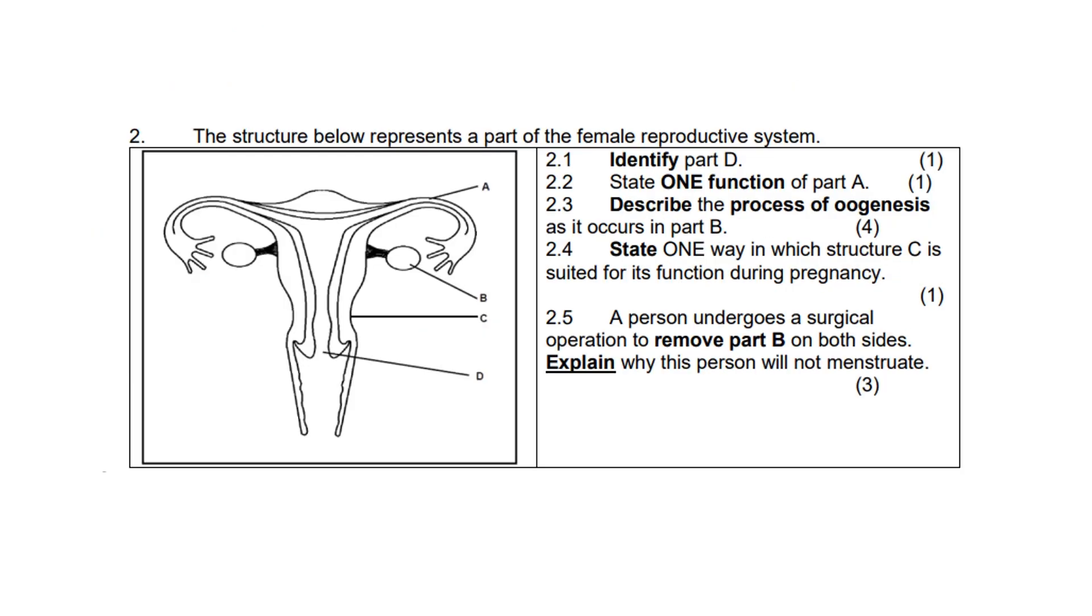The structure below represents a part of the female reproductive system. Let's go through A, B, C, and D. In the diagram, A represents the fallopian tube or the oviduct where fertilization typically occurs. B, the ovary, where egg cells otherwise known as ova are produced.